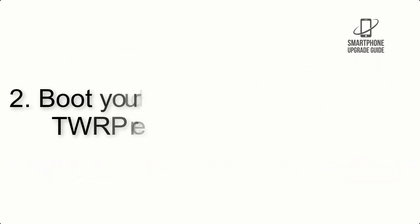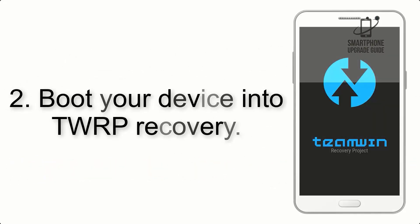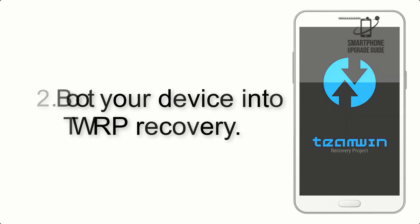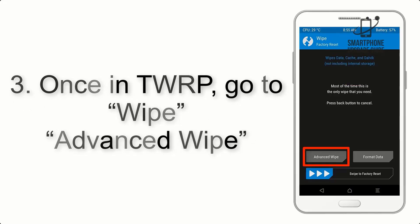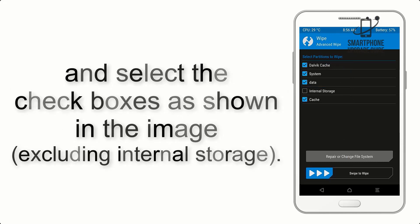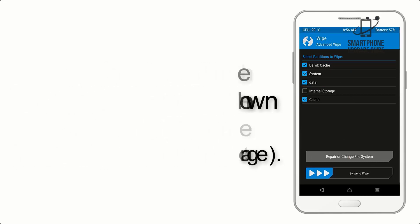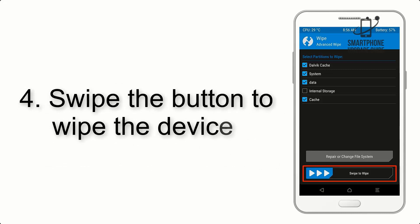Step 2: Boot your device into TWRP recovery. Once in TWRP, click on Advanced Wipe and select the checkboxes as shown in the image, excluding internal storage. Step 4: Swipe the button to wipe the device.